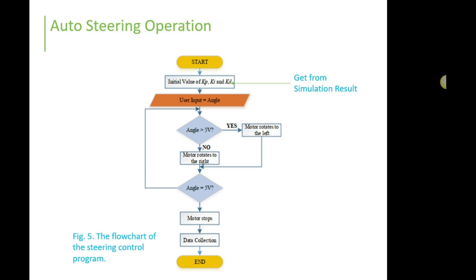This is the auto-steering operation algorithm. The initial values of KP, KI and KD are obtained from the simulation result done using MATLAB and Simulink. The user inputs an angle in voltage value. If the angle is greater than 5V, the motor rotates left; otherwise it rotates right. If the angle equals 5V, the motor will stop.